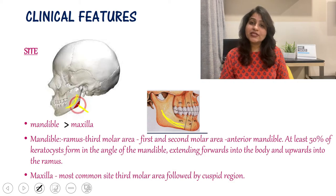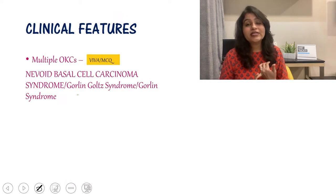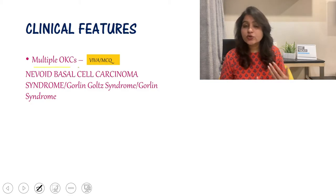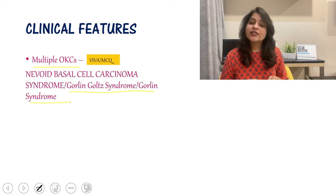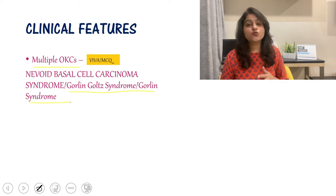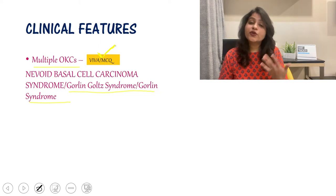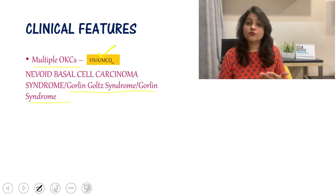An important point: multiple OKCs are seen in nevoid basal cell carcinoma syndrome, also called Gorlin-Goltz syndrome or Gorlin syndrome. This can be a viva, MCQ, or fill-in-the-blanks question. If on a radiograph you see multiple OKCs, you should check for other features of this syndrome.